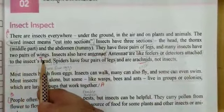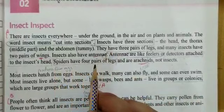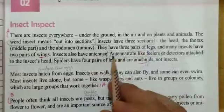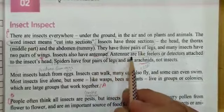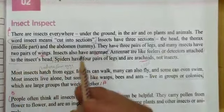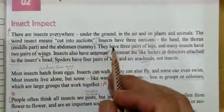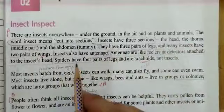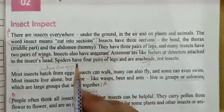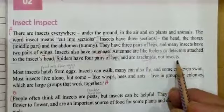Insects have three pairs of legs and many insects have two pairs of wings. Insects also have antennae — antenna means sensor or detector, by which they feel. Antennae are like feelers or detectors attached to the insect's head. Spiders have four pairs of legs. We said before insects have three pairs of legs, but spiders have four pairs of legs, which means spiders are not insects. Spiders are arachnids, not insects.